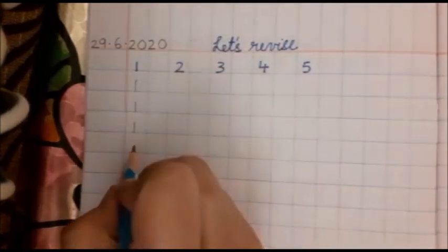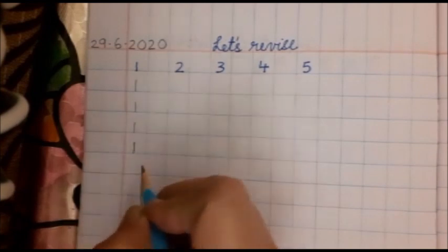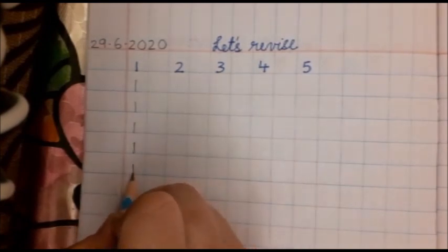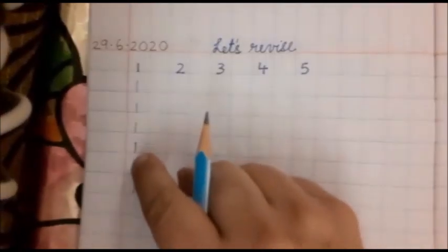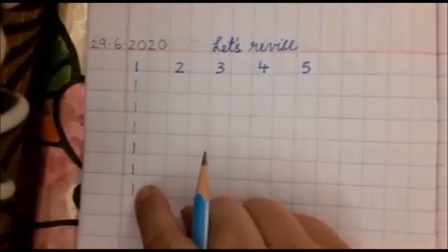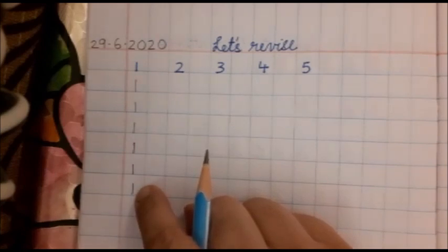1, 2, 3. 1, 1, 1. 1, 2, 3, 4, 5, 6. Anubha ma'am nye 6 times likh liya. Number 1. Now I will stop.